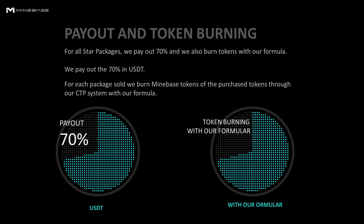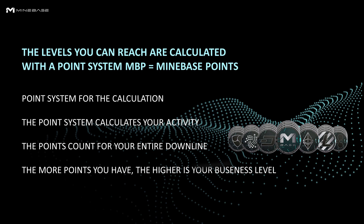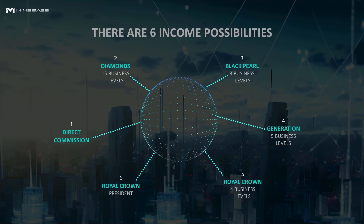The levels you can reach are calculated with a point system: MBPs, which means Minebase Points. The point system calculates your activity. The points are counted for your entire downline. The more points you have, the higher your business level. There are six income possibilities.